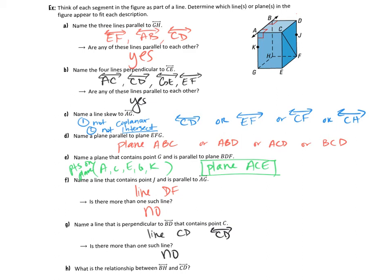Our final question asks about the relationship between line BH and line CD. In three dimensions, BH is the back far vertical edge of the box, while CD is a horizontal top-side edge. They are not coplanar, and they do not intersect — they share no point in common. So the answer is that they are skew lines.